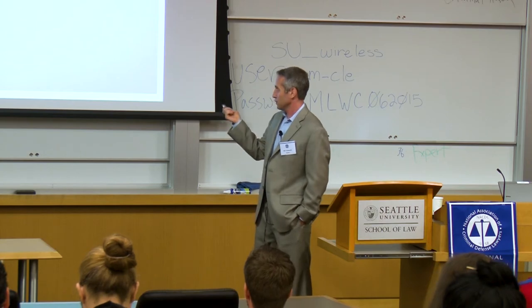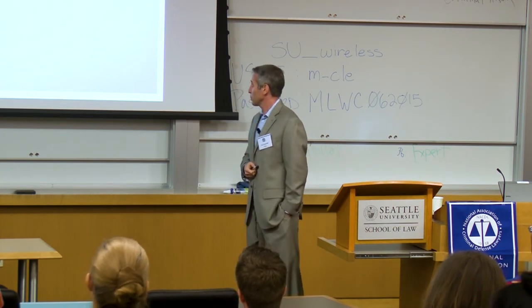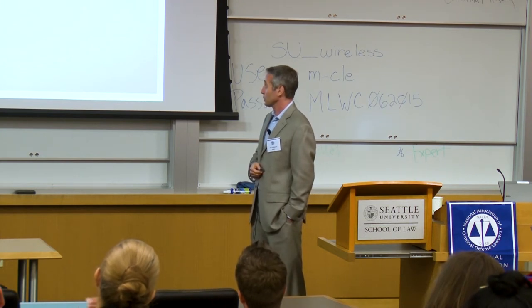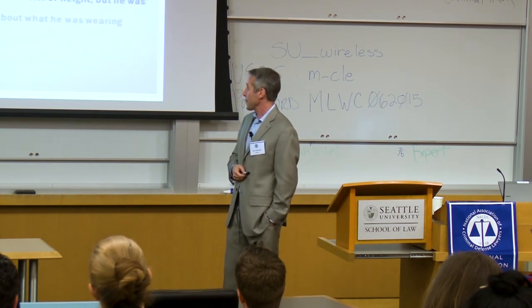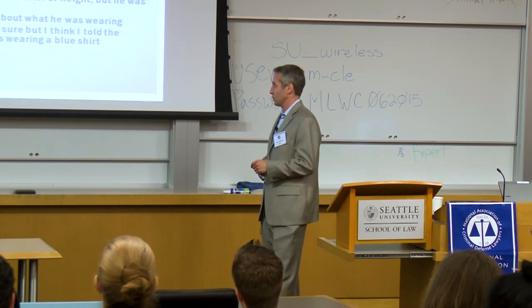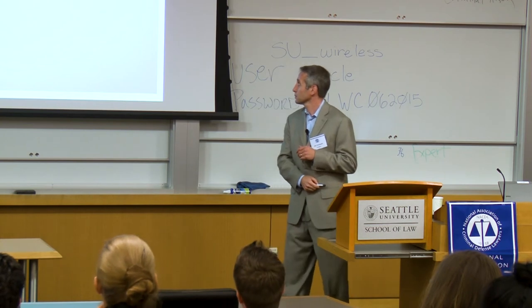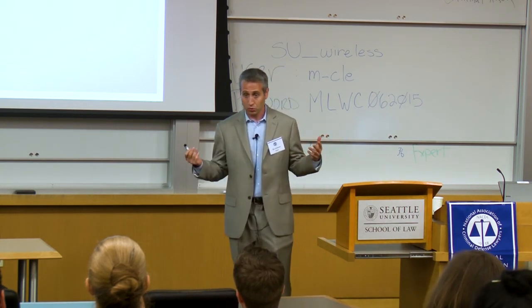Now we're going to go through a witness interview and a potential cross based on that interview to see how they play out. This is a shooting case — the defense is misidentification, the allegation is your client shot a bouncer at a nightclub. In the witness interview on description: 'Had you ever seen the guy before?' — 'No.' 'Can you describe him?' — 'They both looked African-American, dark-skinned, dreadlocks, both relatively short and skinny.' 'Any idea how tall?' — 'I'm not a good estimator of height, but he's not six feet.' 'What was he wearing?' — 'It's been a long time, but I think I told the police after I was shot he was wearing a blue shirt.' Not a bad interview — it gets you the basic idea, it has a description.